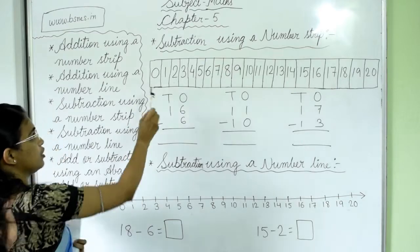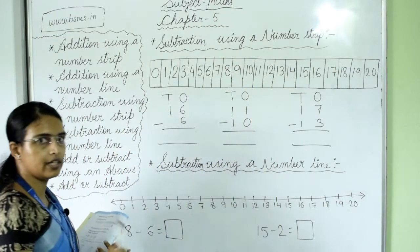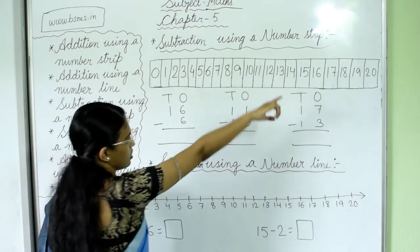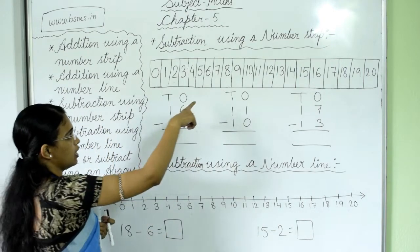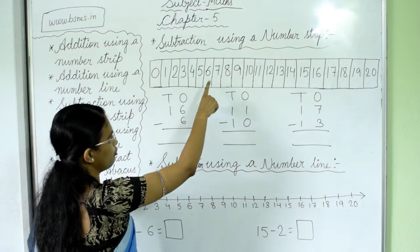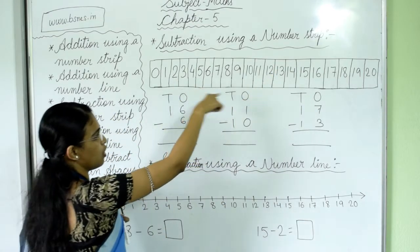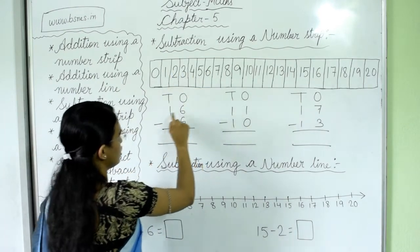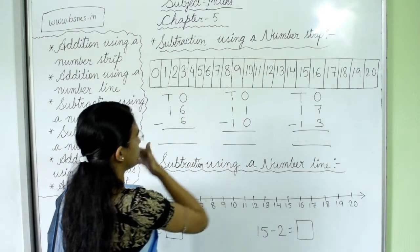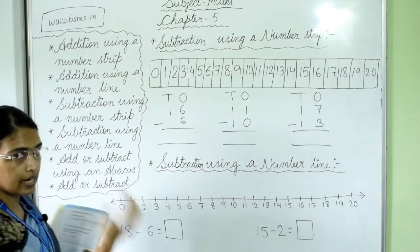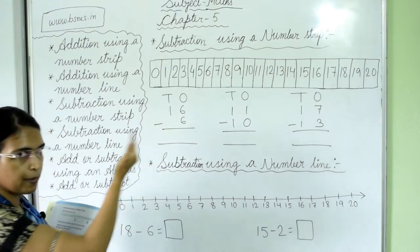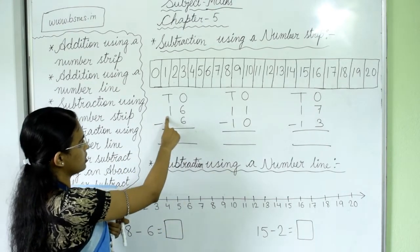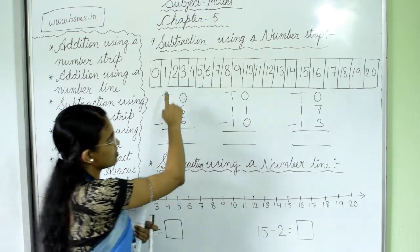Now we will do subtraction using a number strip. In addition, we found the first number and went forward. But in subtraction, we first find the number written at the top on the number strip, then take steps backward. For example, 16 minus 6 — where is 16 on the number strip? It is here.